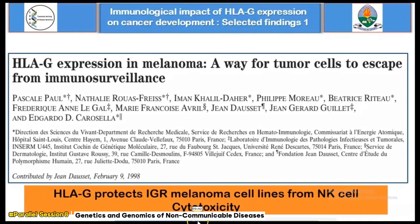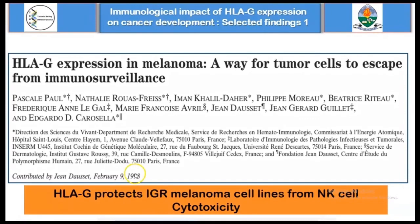Quite many studies have demonstrated that expression of HLA-G in tumor cells impairs the ability of immune cells to respond and destroy them, allowing them to proliferate into malignancies. One such study published in 1998 showed that expression of human leukocyte antigen G in melanoma cell lines could protect them from immune destruction.